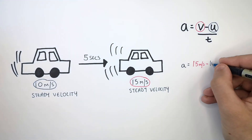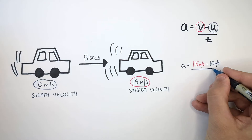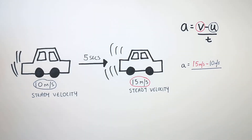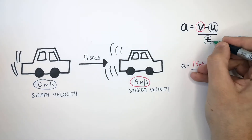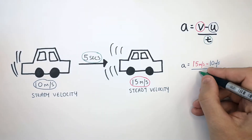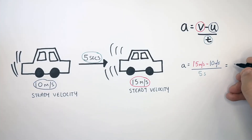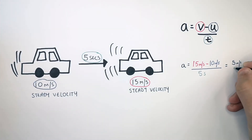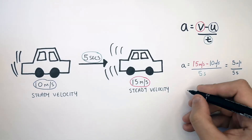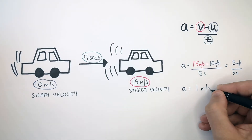So it's going to be 15 meters per second minus 10 meters per second, divided by the time, which is 5 seconds. The change in velocity is 5 meters per second, divided by 5 seconds, which gives you an acceleration of 1 meter per second squared.